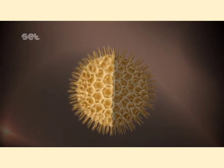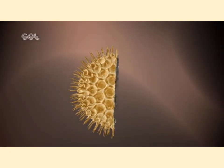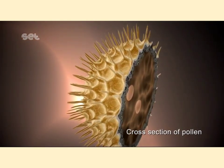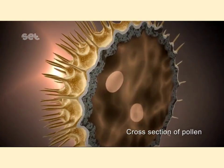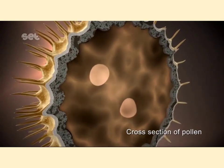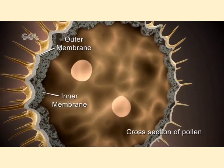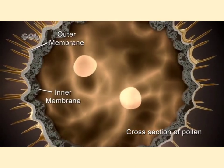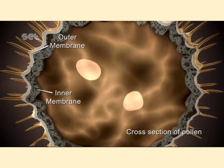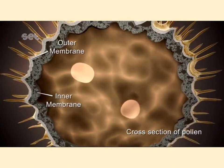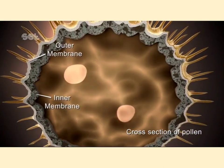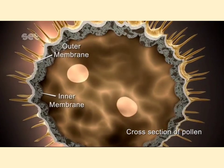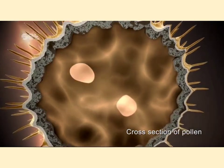This pollen formed inside the anther is released during dehiscence of the anther. If we see the cross section of the pollen, we can observe a prominent two-layered wall. The hard outer layer called exine is made up of sporopollenin, which is one of the most resistant organic materials that can withstand high temperature, strong acids and alkalis — no enzyme can degrade this. The inner layer, intine, is made up of cellulose and pectin and is a thin and continuous layer. The outer layer consists of germ pores which allow the movement of the pollen tube.